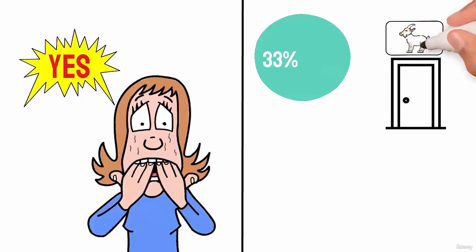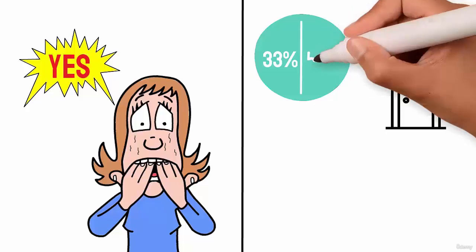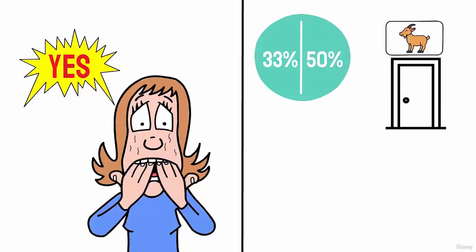Then the presenter chooses a door for you that has a goat. You may think now that you have a 50% chance of winning with only two doors left. But that is not true.